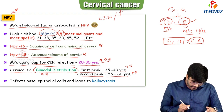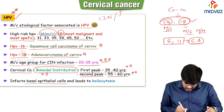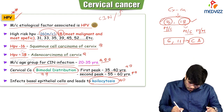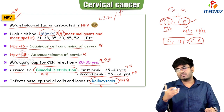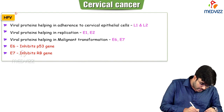HPV infects the basal epithelial cells and leads to dysplastic changes. These dysplastic changes, when seen under the microscope, are known as koilocytes. Koilocytes are the cervical epithelial cells in the transformation zone which have undergone dysplastic changes.